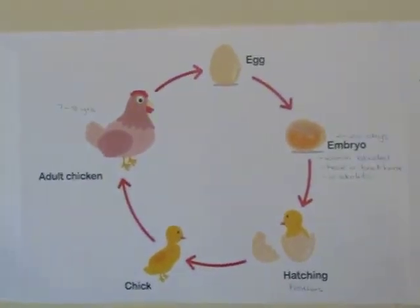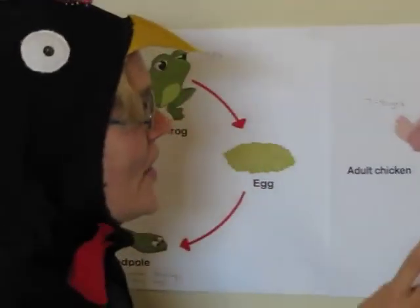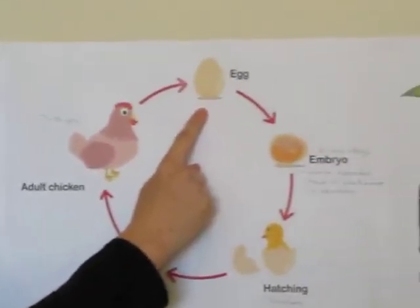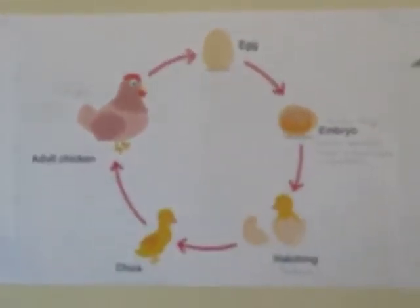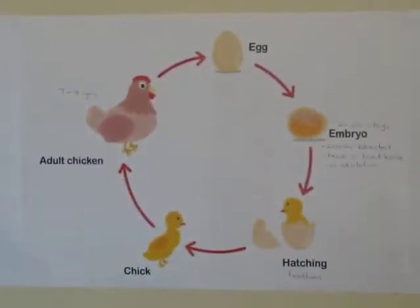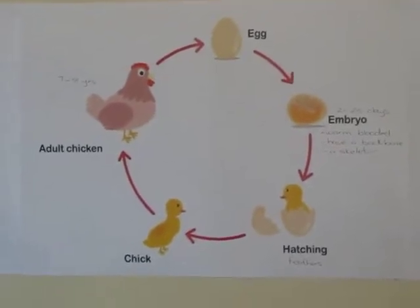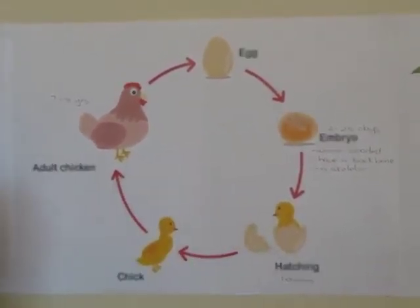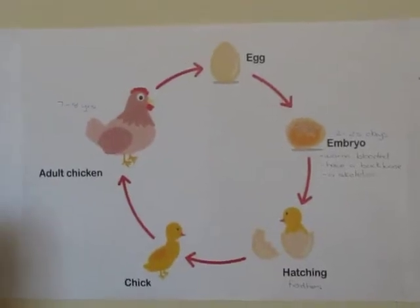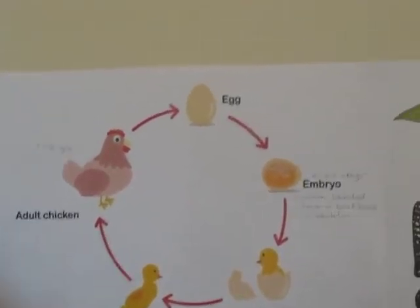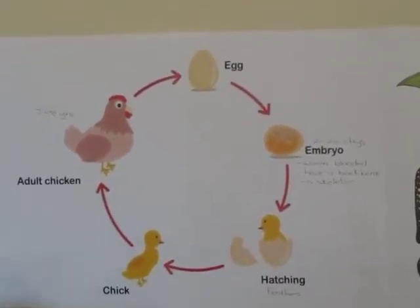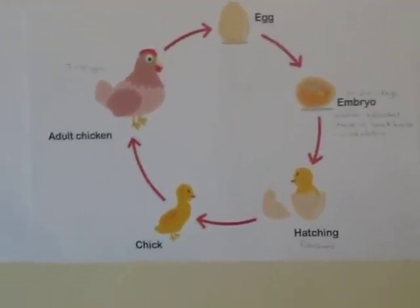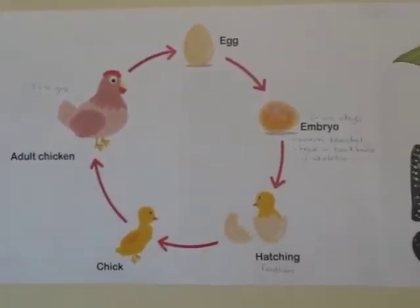The life cycle of the chicken. First of all, it starts with an egg, and this egg is resting in a nest where it keeps warm. You are a little embryo inside the egg, and you are there for about two to twenty-five days. You are warm-blooded, you've got a backbone and a skeleton.